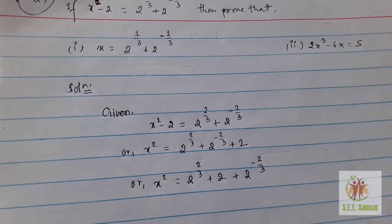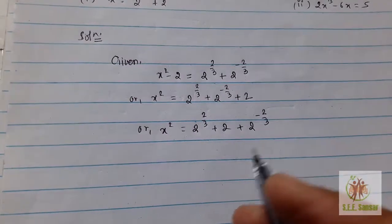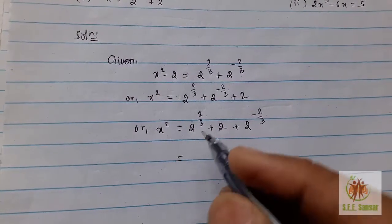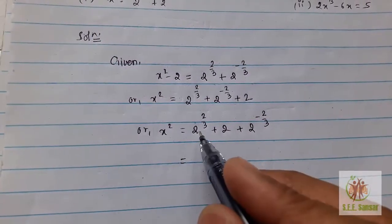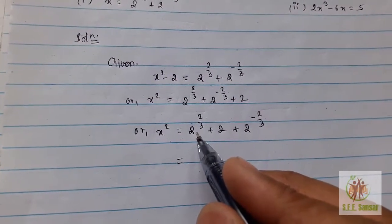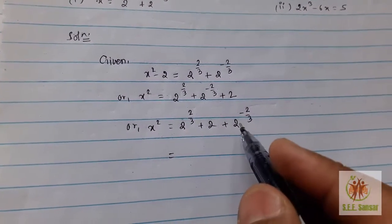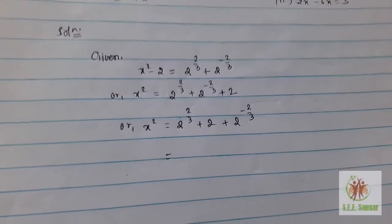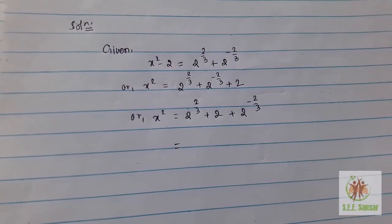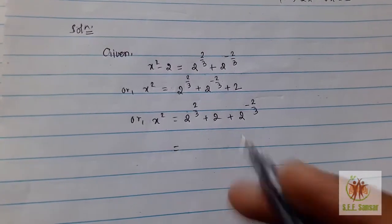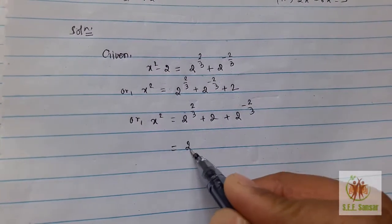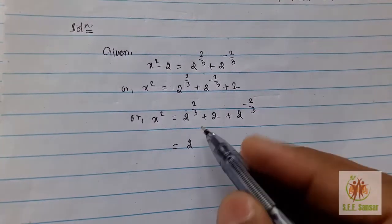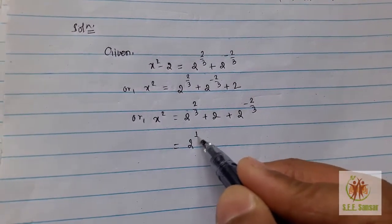This is what we got. So now we try to make it in the form of a² + 2ab + b². This is how we do it.